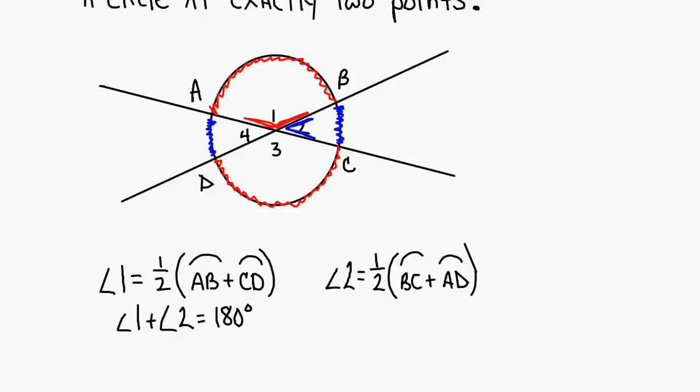That's any time two secants intersect inside the circle. You could be asked to find the angle measure and they'll give you the two arcs. Or they'll give you the angle measure and one of the arcs and you'll have to find the other arc. Just plug the information into the formula and solve for the missing arc.